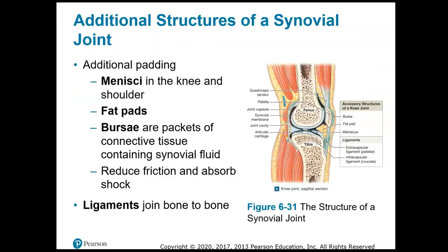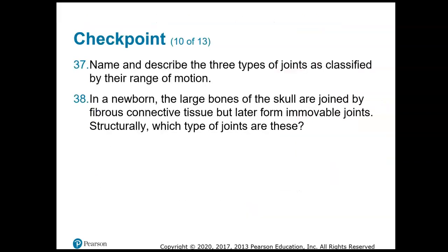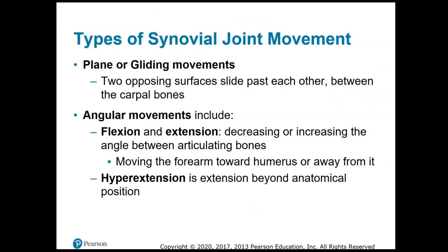The anterior and posterior cruciate ligaments attach the tibia and the femur. The anterior cruciate ligament is very commonly injured in sports like soccer and basketball. If you hear someone has an ACL tear, that's a bad injury that takes a while to recover from. They can have surgery and play again — surgery and technology have improved significantly.